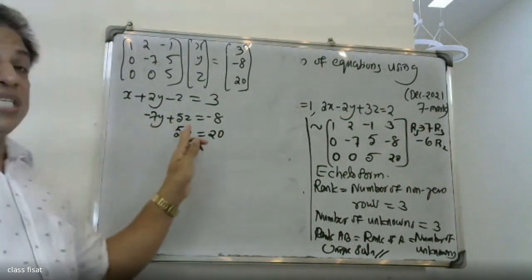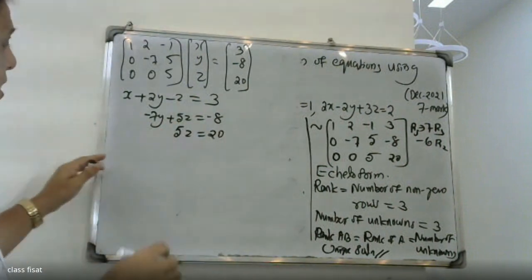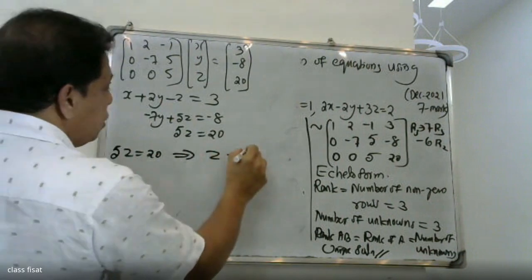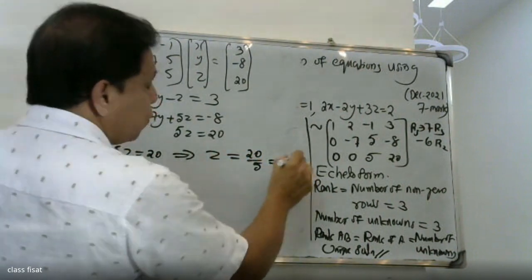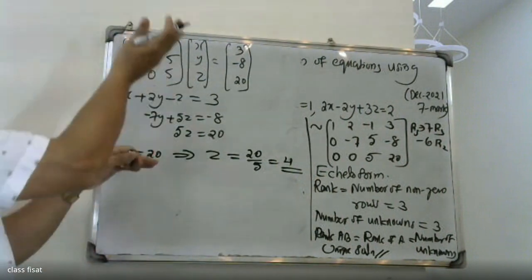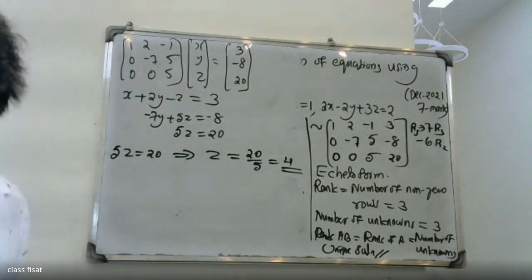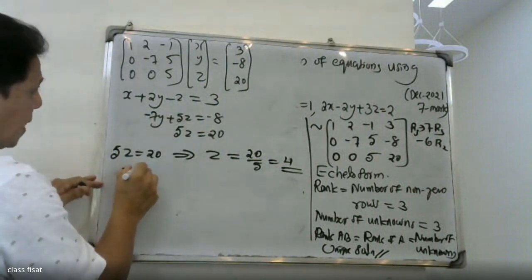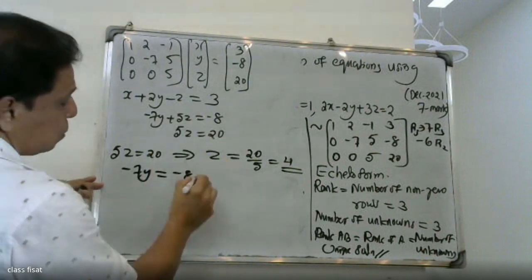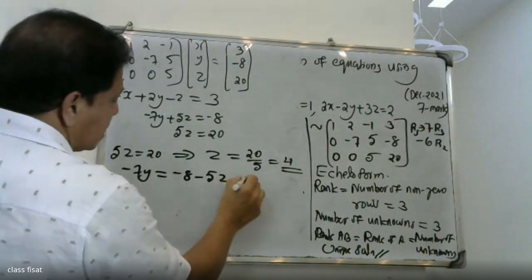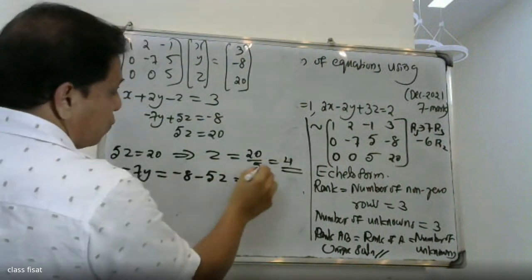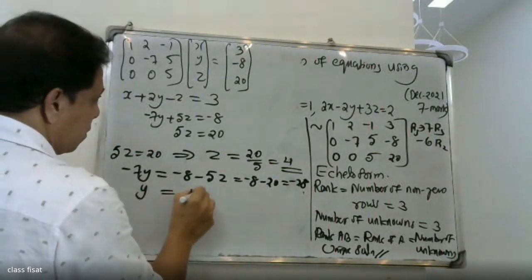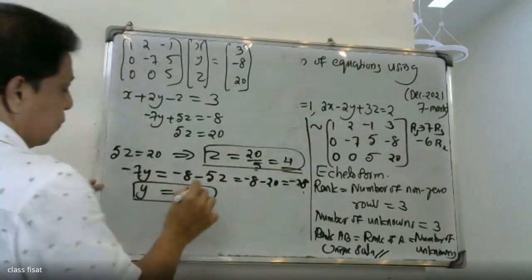From the third equation, 5z is equal to 20, so z is equal to 4. Back substituting into the second equation: minus 7y plus 5 times 4 equals minus 8. So minus 7y plus 20 equals minus 8, giving minus 7y equals minus 28, so y equals 4.